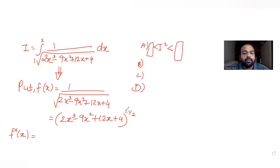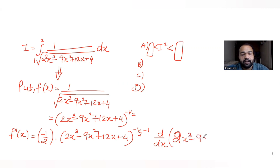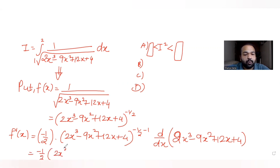Finding f'(x): using the power rule, x^n differentiates to n·x^(n−1). So n−1 gives minus half minus 1. We then find the derivative of the inner function 2x³ minus 9x² plus 12x plus 4. This gives minus half times (2x³ minus 9x² plus 12x plus 4) raised to minus 3/2.